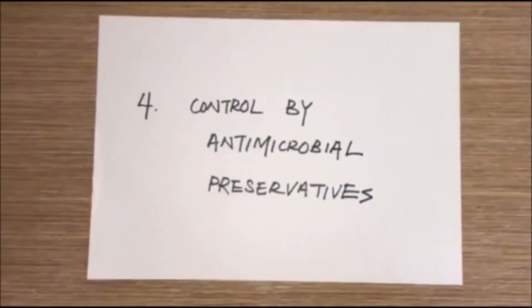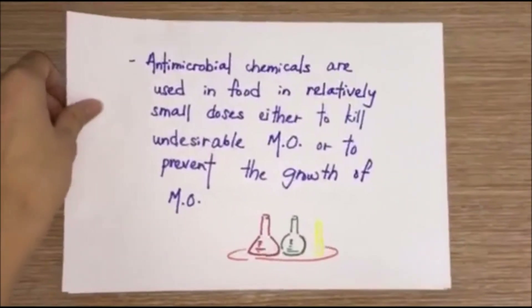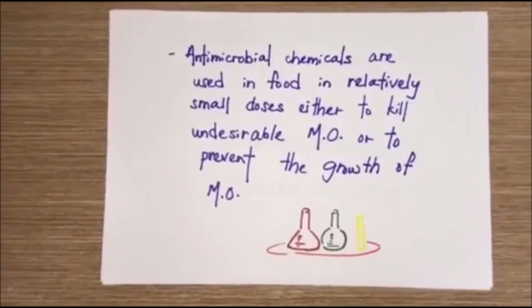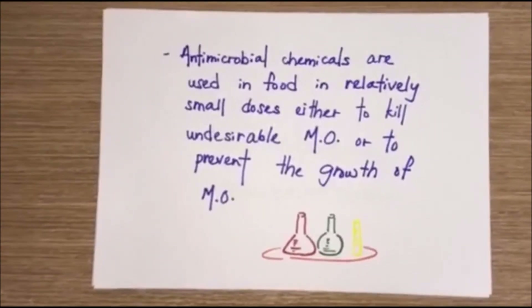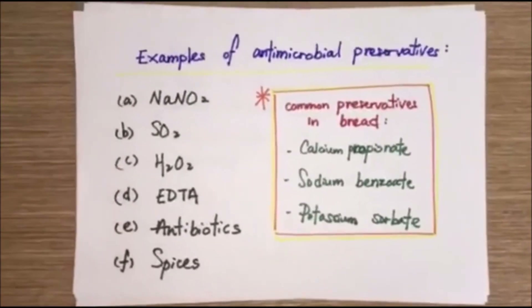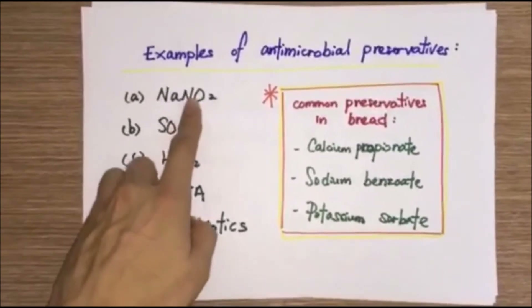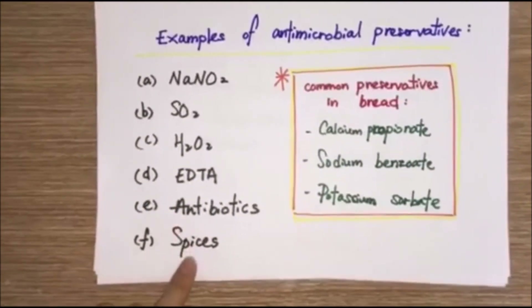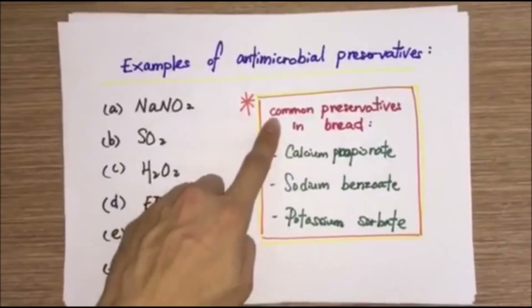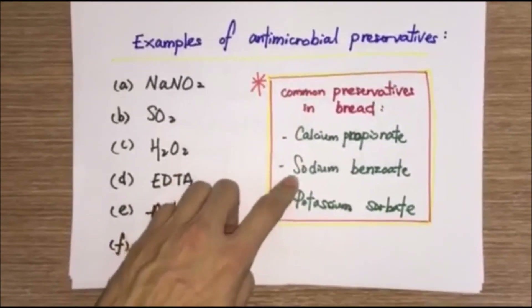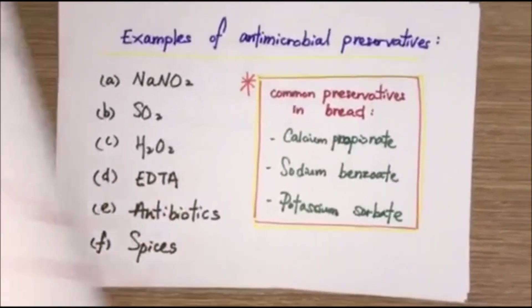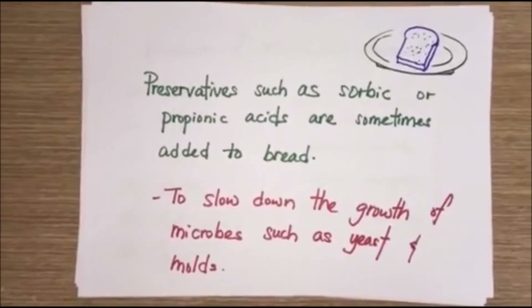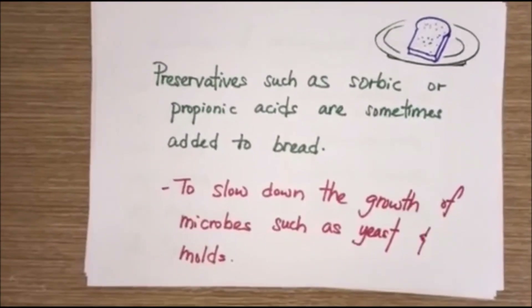Control by antimicrobial preservatives: Antimicrobial chemicals are used in food in relatively small doses to either kill undesirable microorganisms or prevent their growth. Examples of antimicrobial preservatives include NaNO2, SO2, H2O2, EDTA, antibiotics, and spices. The common preservatives in bread are calcium propionate, sodium benzoate, and potassium sorbate. Sorbate or propionate acids are sometimes added to bread to slow down the growth of microbes such as yeast and mold.